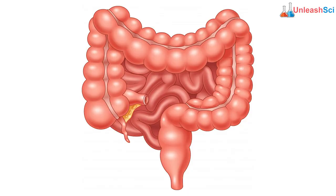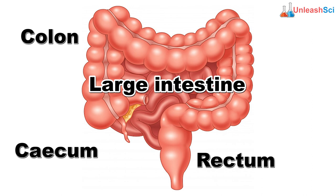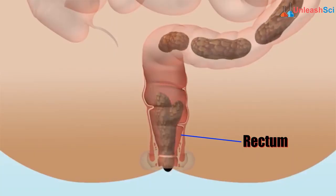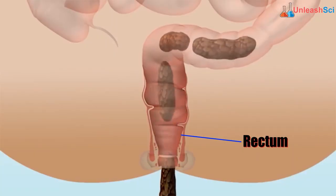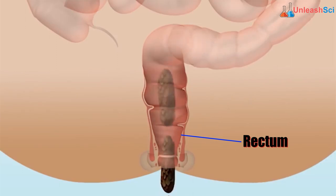Whatever digestion is left behind takes place in the large intestine. The large intestine is divided into the cecum, colon, and rectum. Absorption of water also takes place in the large intestine. In the rectum, the undigested food is stored in the form of feces and then passed out of the body with the help of the anus.